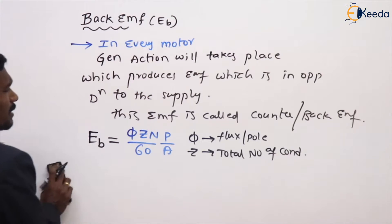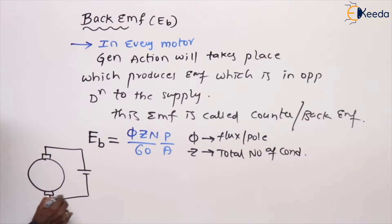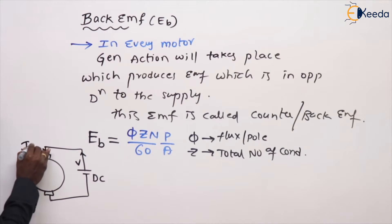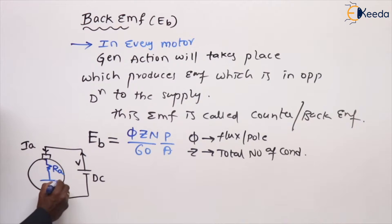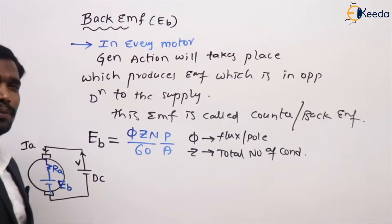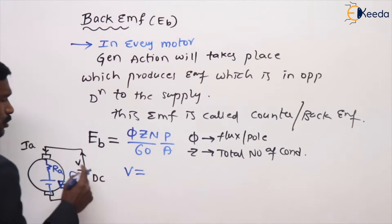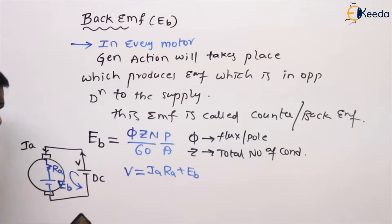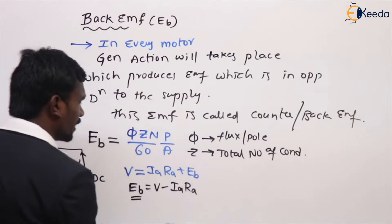Let's take a motor. For example, this is my DC motor which is connected to the supply voltage V volts. Current flows and enters into the armature. This armature has armature winding with armature resistance. The EMF here is back EMF — not generated EMF. So the equation is: V equals IA·RA plus EB, and therefore EB equals V minus IA·RA.